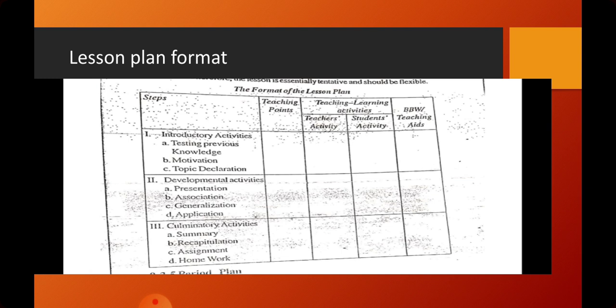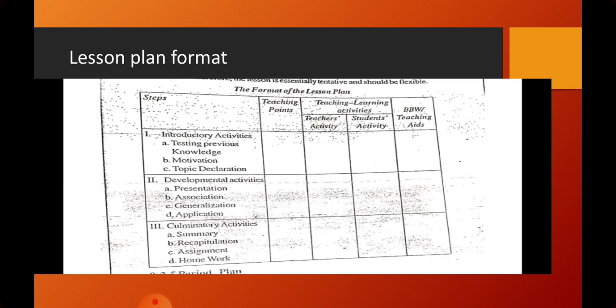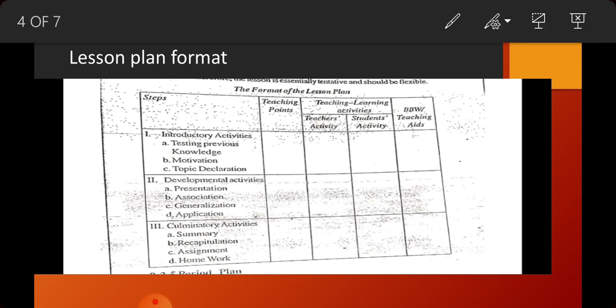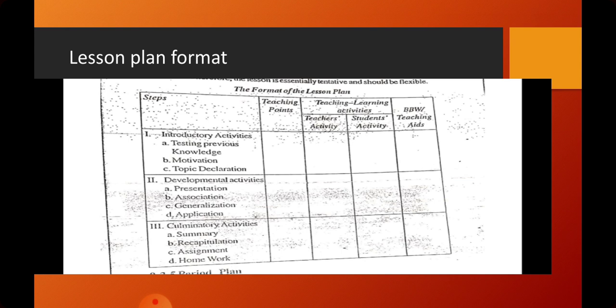Now, how to write this lesson plan is very important. There will be a lesson plan format. The current format for the lesson plan is as follows: there will be some steps. The columns in the format include Steps, Teaching Points, Teaching-Learning Activities — which contains Teacher Activity and Student Activity — and the last column is Blackboard Work, Teaching Aids, or TLM.